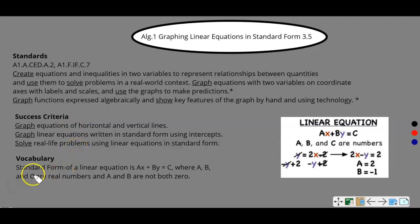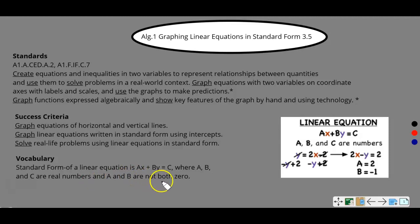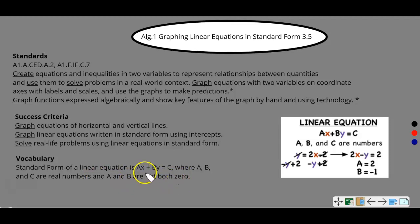New vocabulary. Standard form of a linear equation is AX plus BY equals C, where A, B, and C are real numbers, and A and B are not both zero. So A or B can be zero, but they can't both be zero, or you do not have a linear equation in standard form. In general, AX plus BY equals C — A, B, and C are just real numbers.